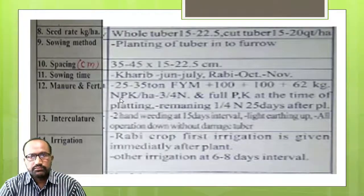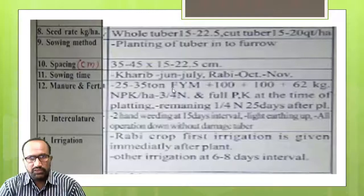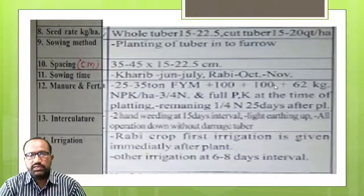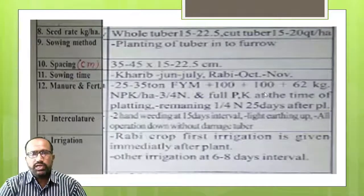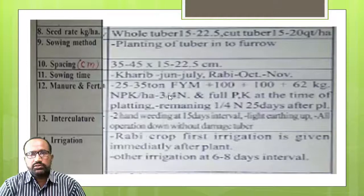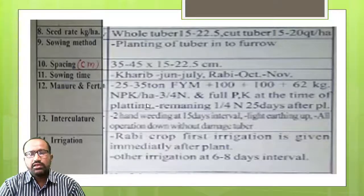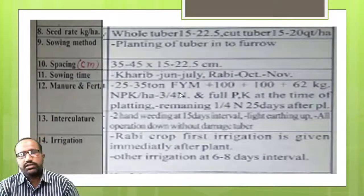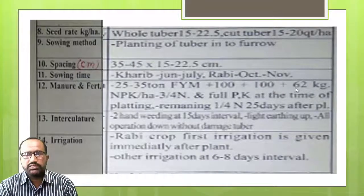Manures and fertilizers: apply 25 to 30 tons of FIM per hectare at the time of land preparation. Chemical fertilizer: 100 kg nitrogen plus 100 kg phosphorus plus 62 kg potassium per hectare. Three-fourths dose of nitrogen and full dose of phosphorus should be given at the time of planting. Remaining one-fourth dose of nitrogen should be given 30 to 45 days after planting.